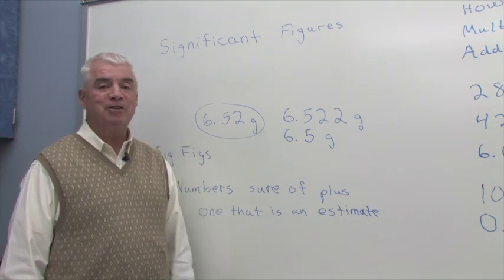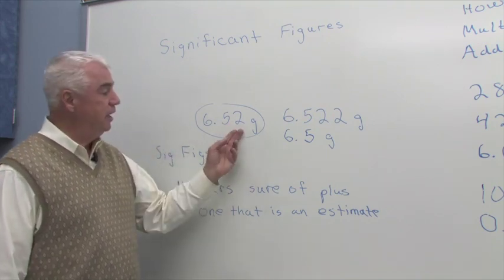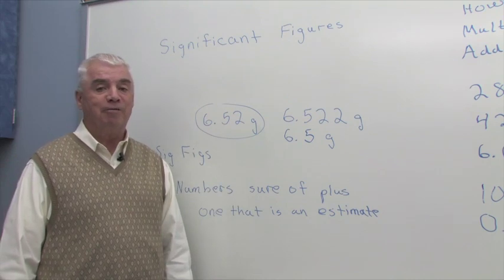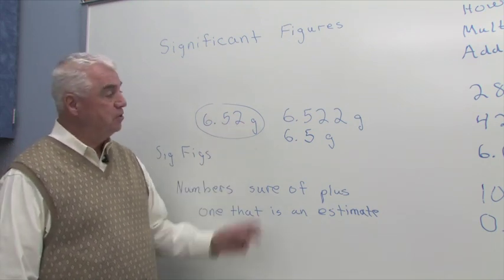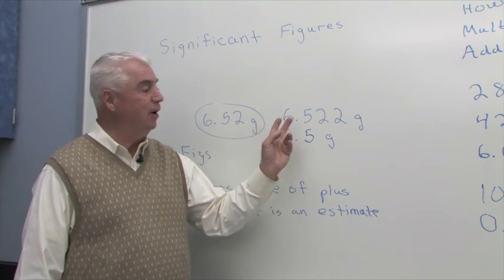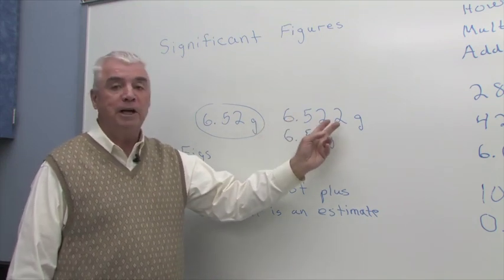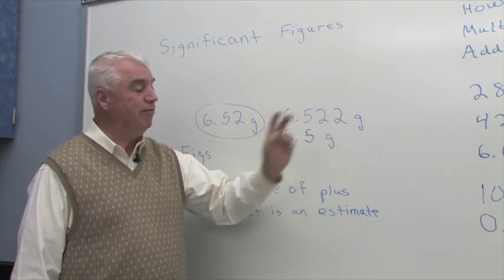The manufacturer calls it a centigram balance because it's accurate to the hundredth of a gram. And so these are meaningful numbers. Someone else using that same balance might record one more decimal place, 6.522.